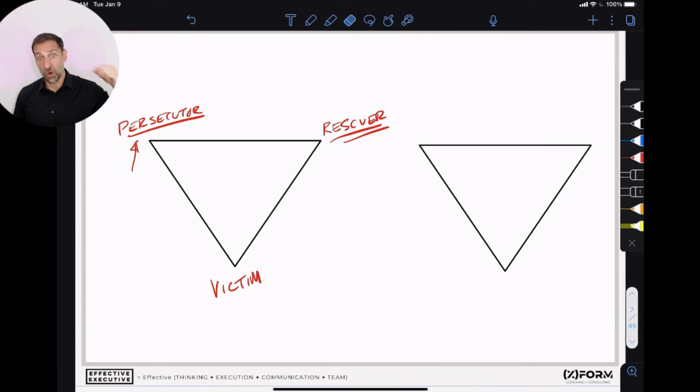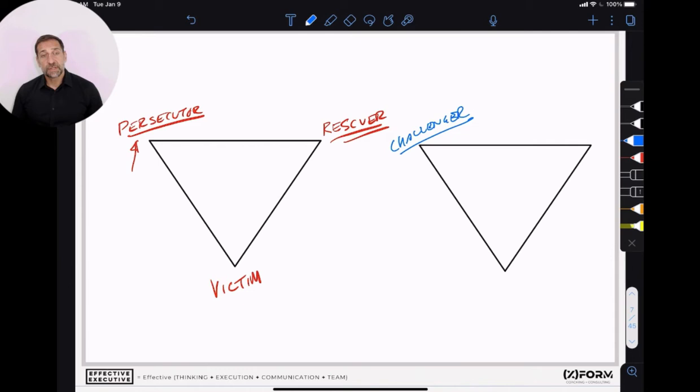So the question is, if you know you're playing one of these roles and the goal is to move into a more productive role, what are those roles? And they are these. Instead of the persecutor, what you have is the challenger. The challenger gets what they need by creating clarity and structure for the person that they need something from. They set expectations, they explain the value of what it is that needs to be done, they express their feelings. You'll hear them say things like, I'm concerned that X Y and Z. They model ownership with a set boundary, so they'll say I can do this but I can't do that, I need you to do this. And so instead of being a persecutor where they're bullying, they're using tact and finesse to get what they need.